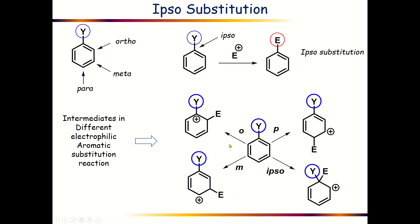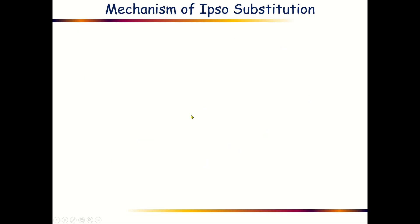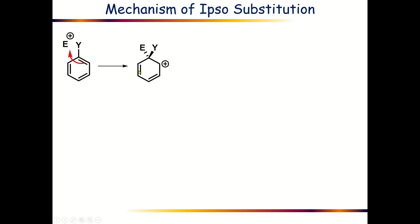Now let us understand the mechanism of ipso substitution reaction. If we draw the benzene derivative, then in presence of the electrophile E+, the benzene pi electron cloud will definitely attack E+ and thereby produce this particular carbocation, which is also known as the sigma complex.